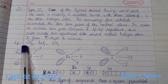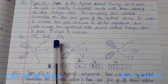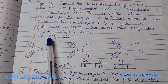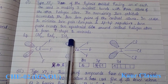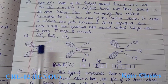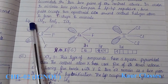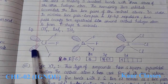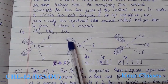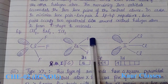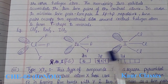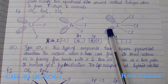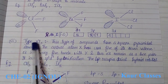Examples of XY3 type include chlorine trifluoride (ClF3), bromine trifluoride (BrF3), and iodine trichloride (ICl3). In ClF3, the central chlorine atom has three bond pairs and two lone pairs. Similarly, in ICl3, there are three covalent bonds and two lone pairs on the central iodine atom.